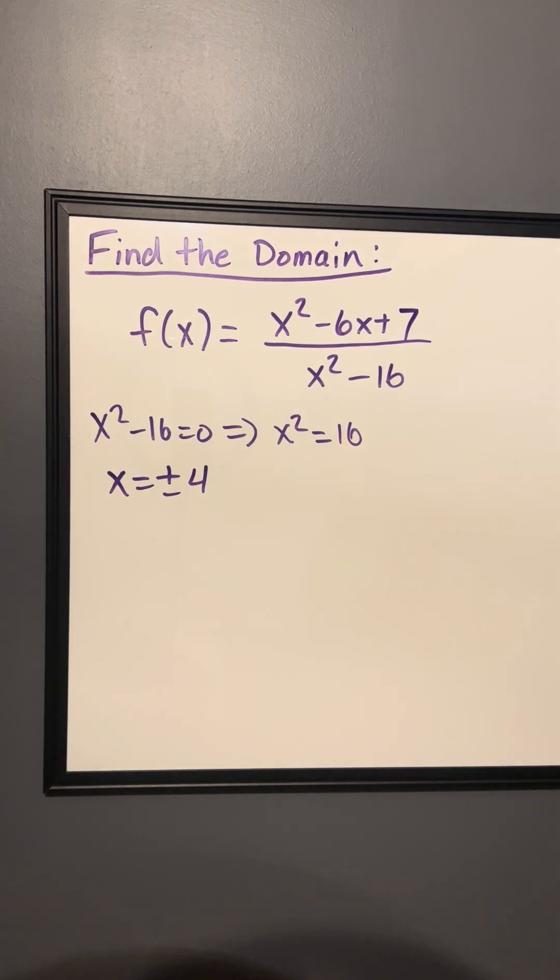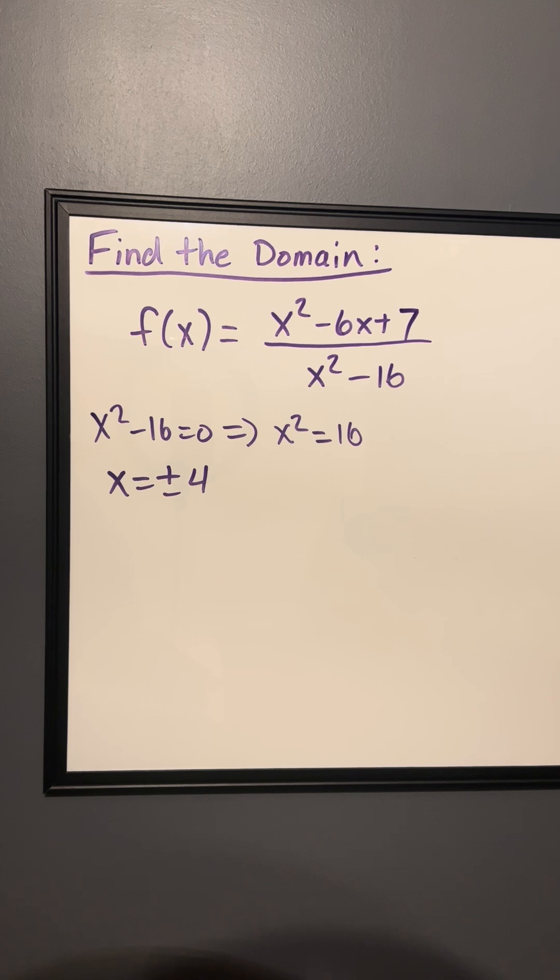Now, that means at those two values there's going to be a vertical asymptote. So when we write our domain in interval notation, we need to account for those.